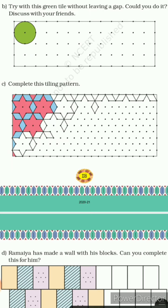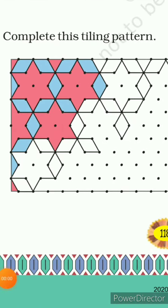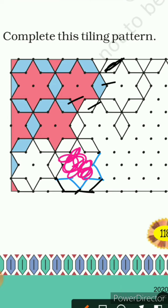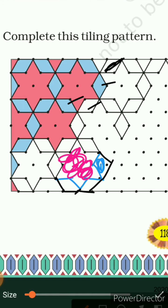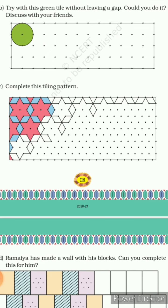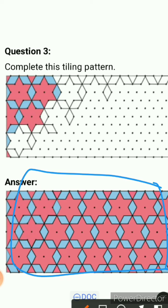Next is: complete this tiling pattern. Aapko yeh styling pattern complete karna hai. They are using two colors — first one is light blue and another one is pink. What you have to do: first make the star shape, just like this. Iss star shape ko aapko complete karna hai, and after that color it with pink. Aapki jo baaki side mein boundaries hain, unko blue color se color karna hai. Aap is pattern ko complete karenge aur aise dikhega.